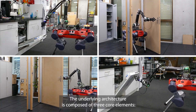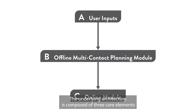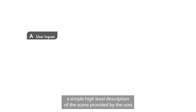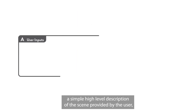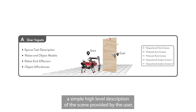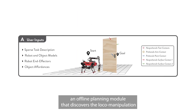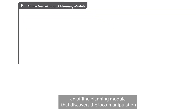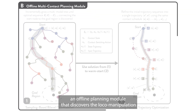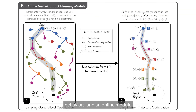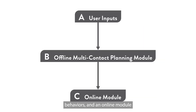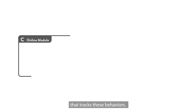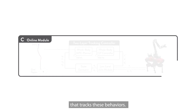The underlying architecture is composed of three core elements: a simple high-level description of the scene provided by the user, an offline planning module that discovers the loco-manipulation behaviors, and an online module that tracks these behaviors.